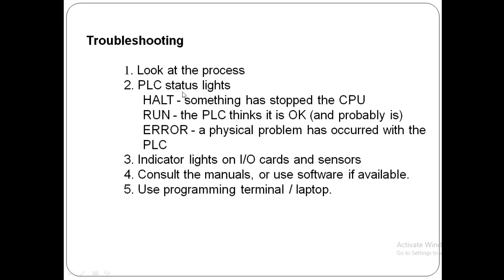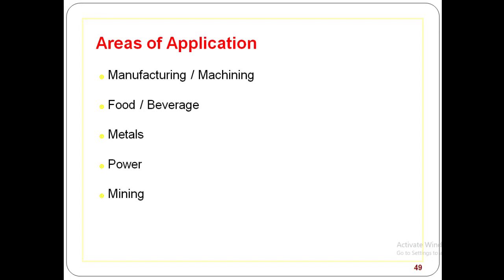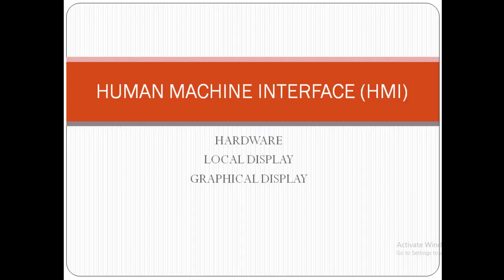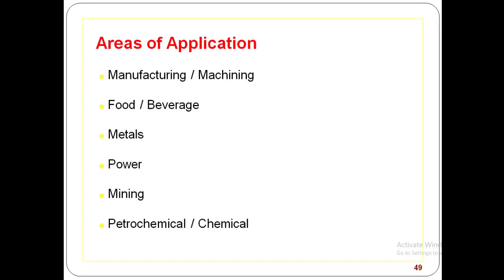Troubleshooting a PLC is straightforward if you follow these steps: look at the process status lights — check whether the halt light is on or off, check the run light to see if it is okay, and check the error light, which will be on if there is an error. Check indicator lights on the input/output cards to see which inputs or outputs are active. Consult the manuals, use software if available, and use a programming terminal or laptop to check. Key application areas include manufacturing, machining, food and beverage, metals, power industries, mining, petrochemical, and chemical industries.